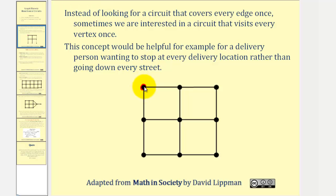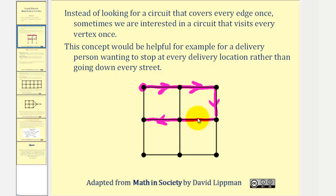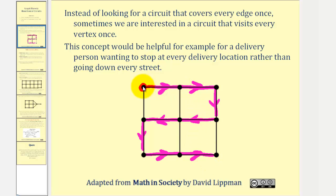they might start here, go in this direction, turn, go in this direction, turn, and then go in this direction. Notice how this would be a path rather than a circuit, because the starting vertex and ending vertex are not the same. And notice how the delivery person could also take different routes and still visit each vertex exactly once.